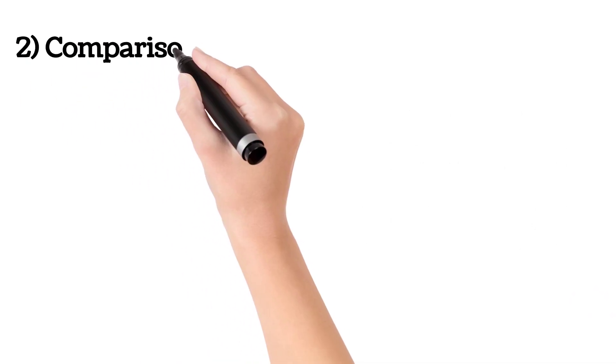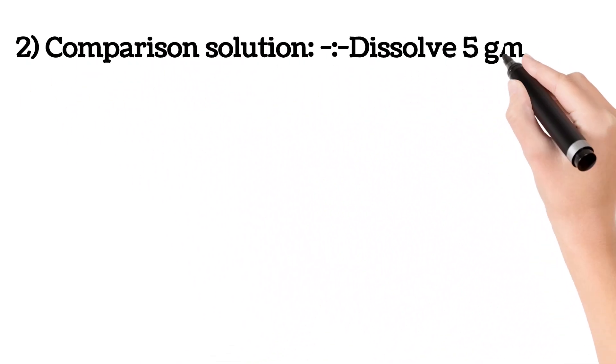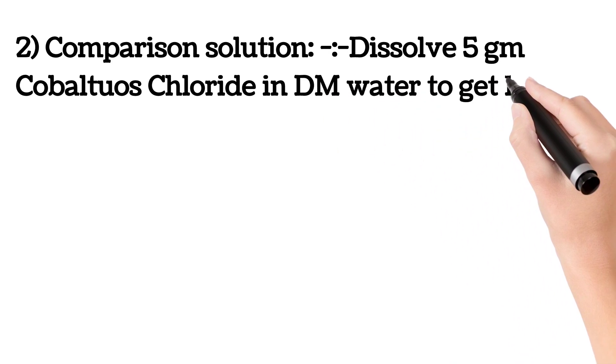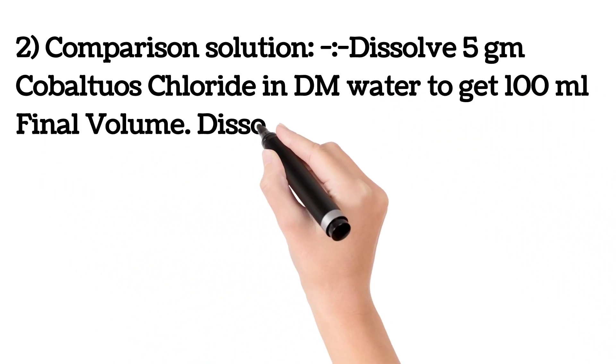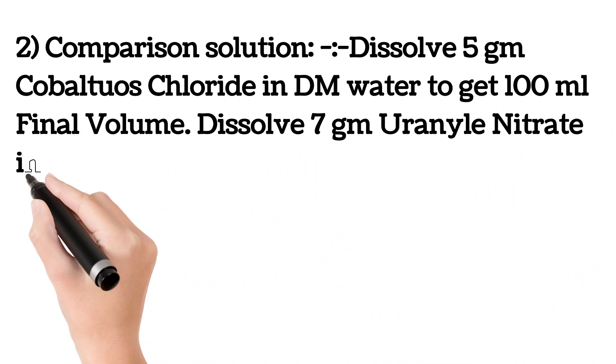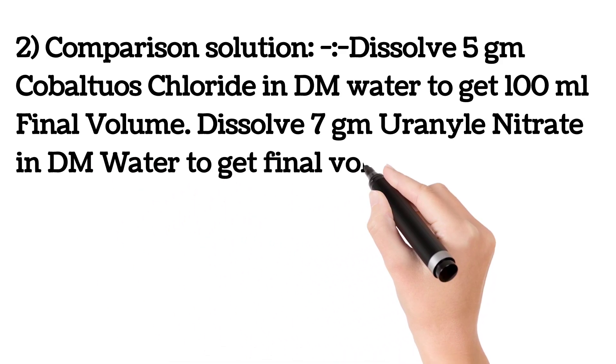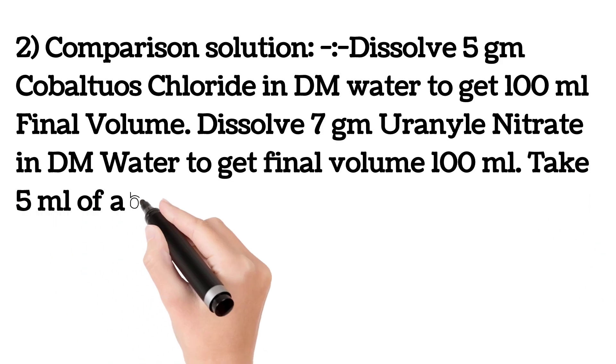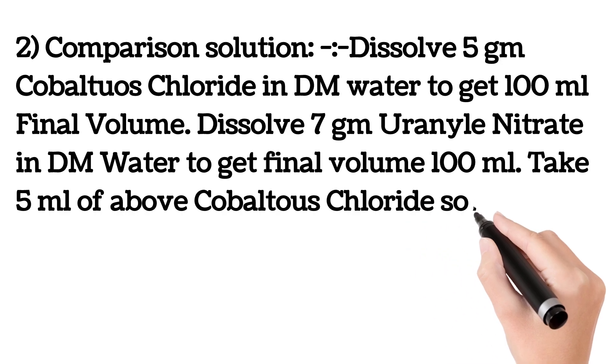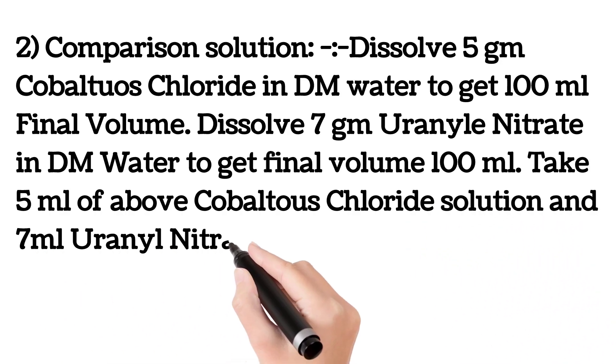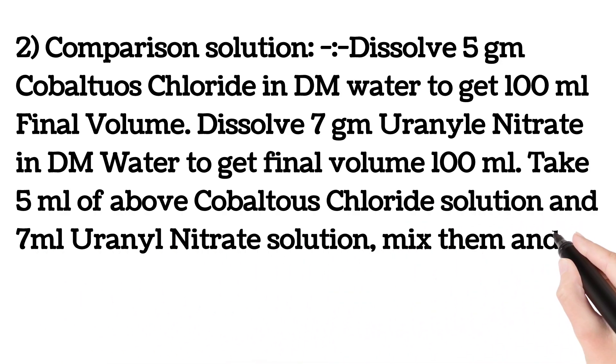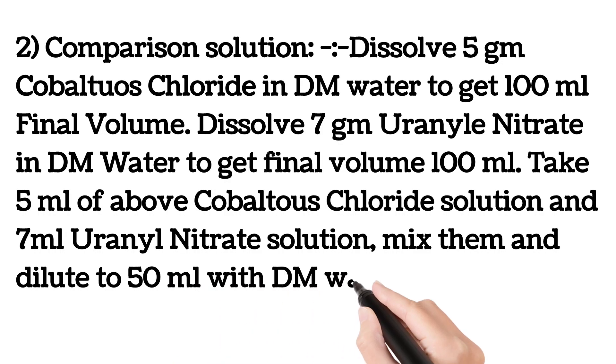Comparison solution: Dissolve 5 g cobaltous chloride in DM water to get 100 ml final volume. Dissolve 7 g uranyl nitrate in DM water to get final volume 100 ml. Take 5 ml of above cobaltous chloride solution and 7 ml uranyl nitrate solution. Mix them and dilute to 50 ml with DM water.